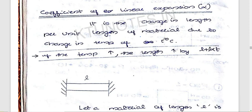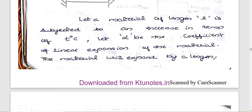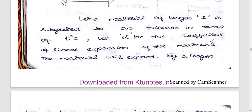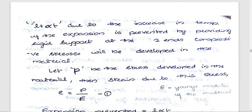For 1 degree increase, the expansion is alpha. For T degrees increase, it is alpha T, so the total length increase is L alpha T. If we have the original length L and the coefficient of expansion alpha, the total new length is L plus L alpha T.